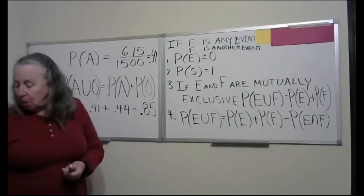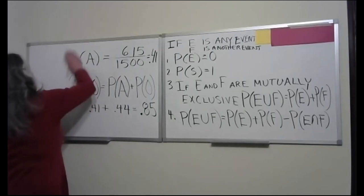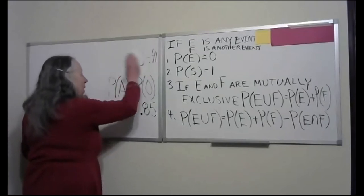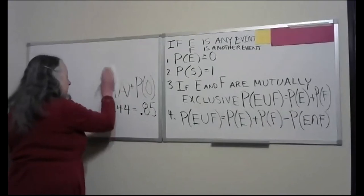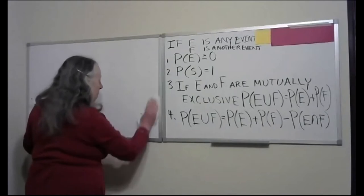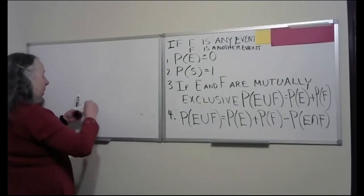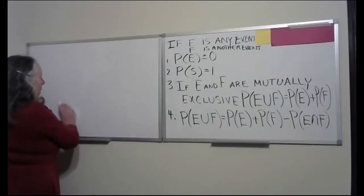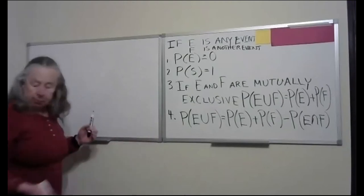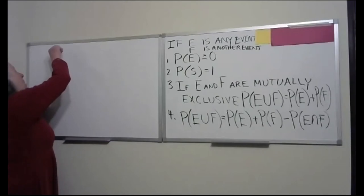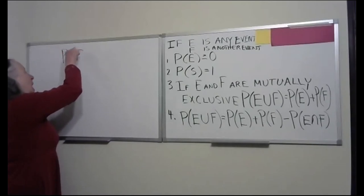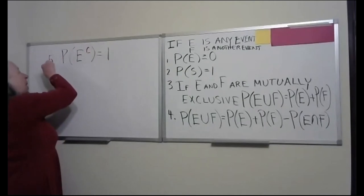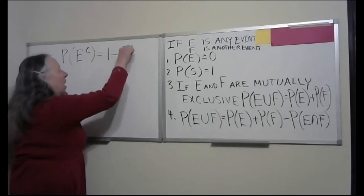Last but not least in the rules, we have the complement. The probability of the complement of a set is equal to one minus the probability of the original set.